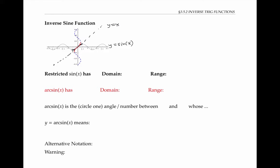our restricted sine x has domain from negative pi over two to pi over two. Its range is still from negative one to one, just like the regular sine x, because I've taken the biggest possible piece of the graph whose flipped version is still a function.